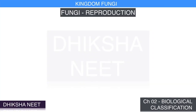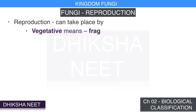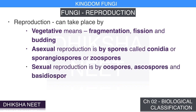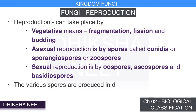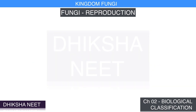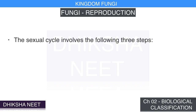Fungi reproduction: reproduction in fungi can take place by vegetative means such as fragmentation, fission, and budding. Asexual reproduction is by spores called conidia, sporangiospores, or zoospores. Sexual reproduction is by oospores, ascospores, and basidiospores. The various spores are produced in distinct structures called fruiting bodies.